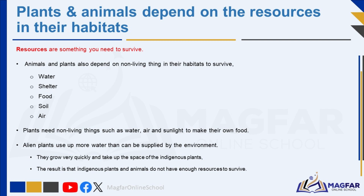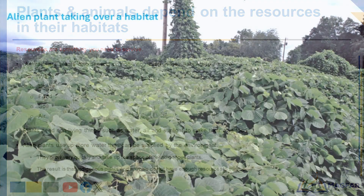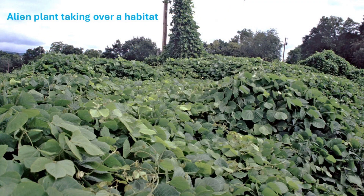In some places, some plants can use up all the resources in the habitat, and other living organisms will not be able to survive there. These plants are called alien plants — they are greedy, using up a lot of water, growing really fast, and taking up a lot of space. Because the alien plants are so demanding, they use up resources that the native plants and animals need to survive. It is important to remove alien plants from the environment, to help keep the natural balance and ensure indigenous plants and animals have enough resources to live healthy lives in their own habitat.